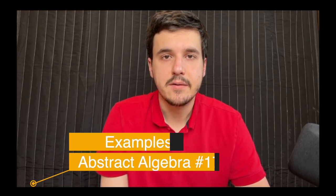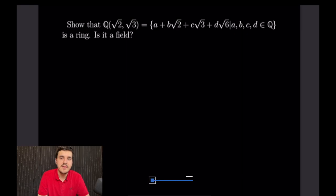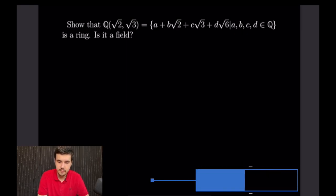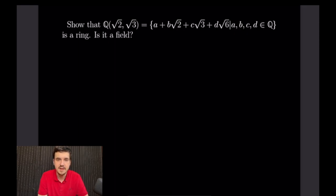Welcome back to our 17th example video following our course on abstract algebra. Today's example video is all on rings. I have eight examples planned. The first one asks us to show that Q(√2, √3), which is the set of all numbers of the form a + b√2 + c√3 + d√6 where a, b, c, d are rational numbers, is a ring, and to see if it is also a field.